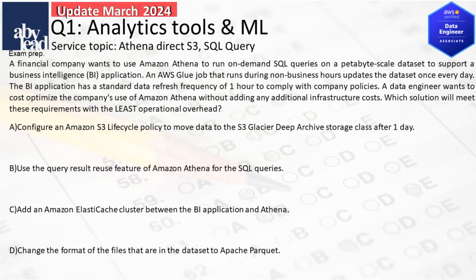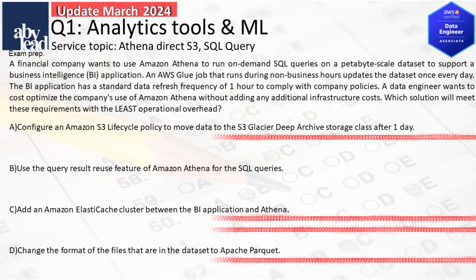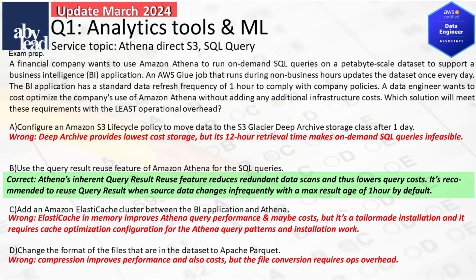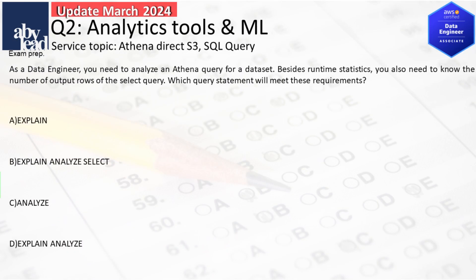Question 1: How do you cost optimize Athena on-demand SQL queries for BI with hourly updates with least overhead? Storing in deep archive with 12-hour retrieval is infeasible for on-demand queries. Operational overhead is required for performance measures with ElastiCache or file compressions. Better is to reduce redundant scans and costs with Athena's query result reuse for hourly data changes.